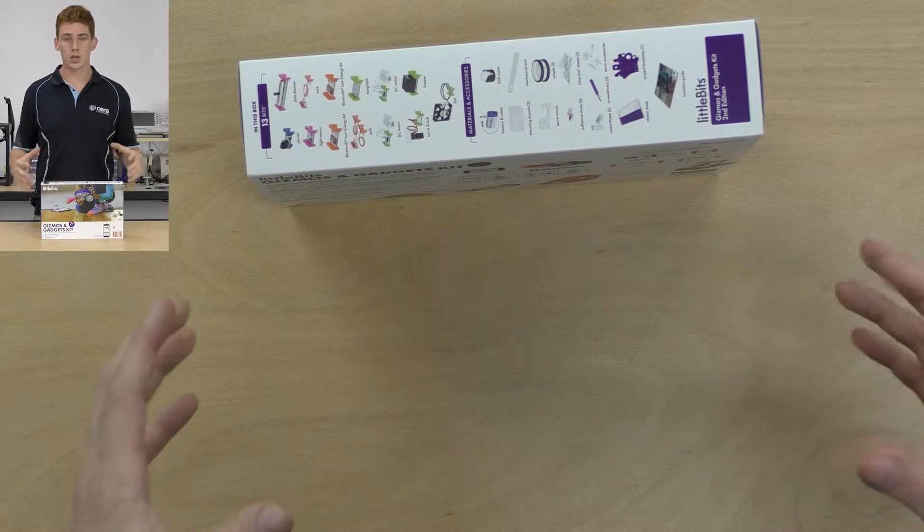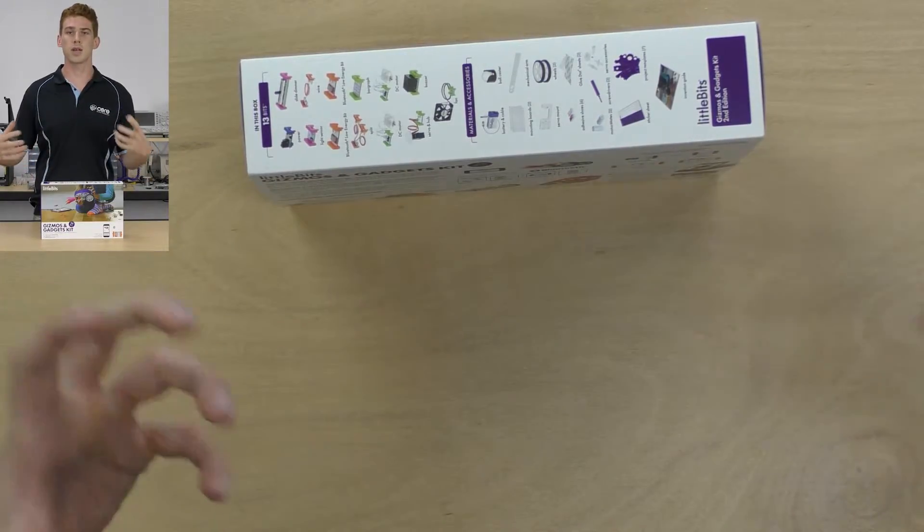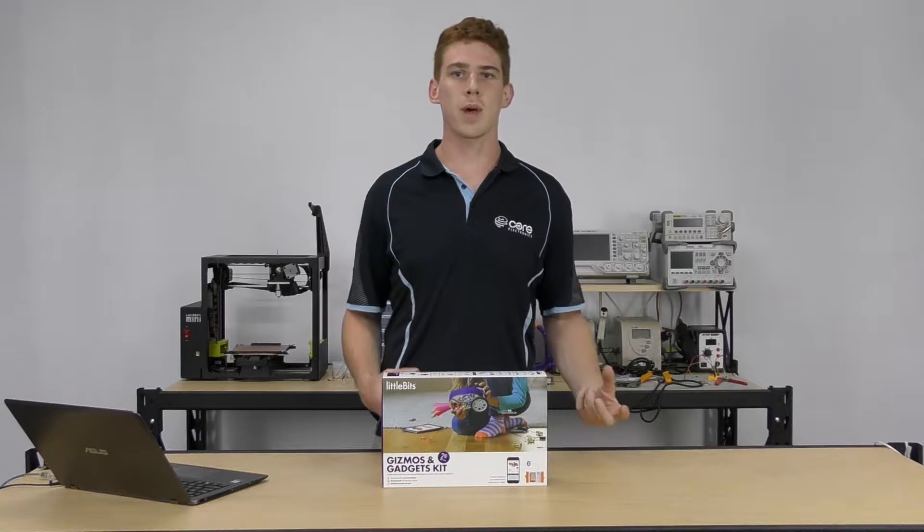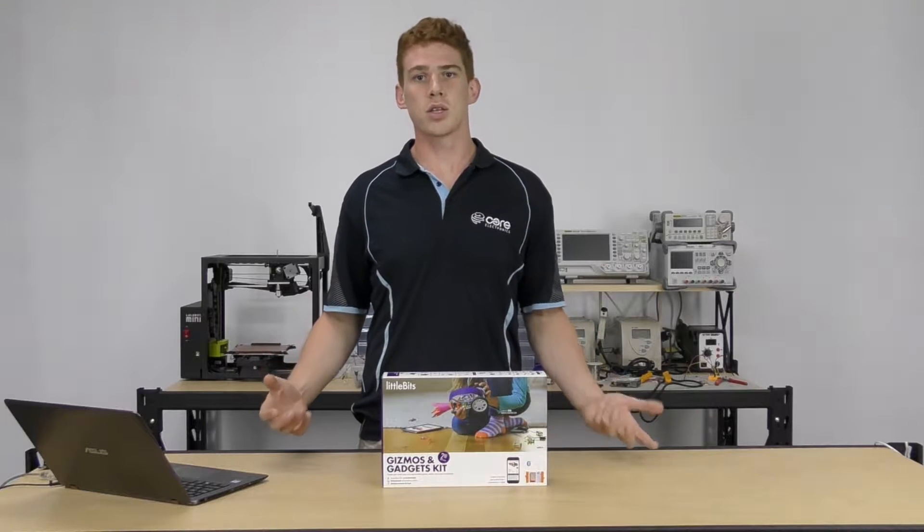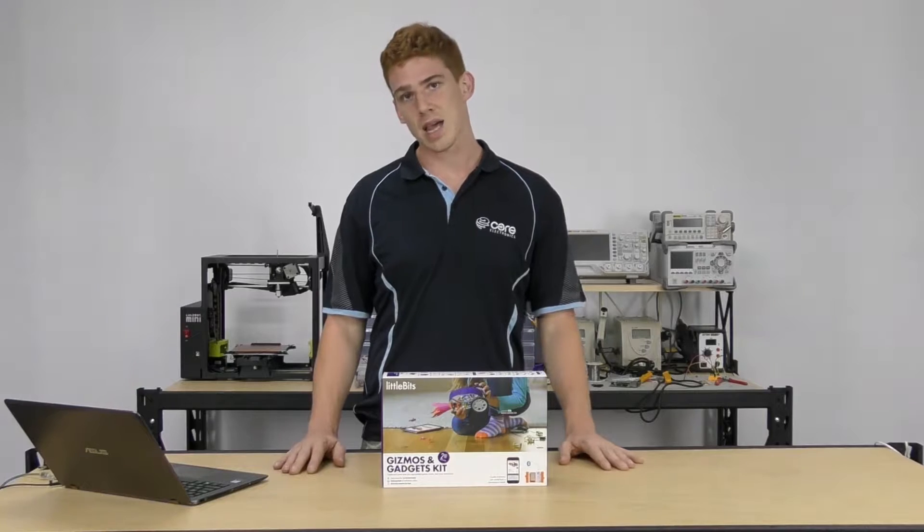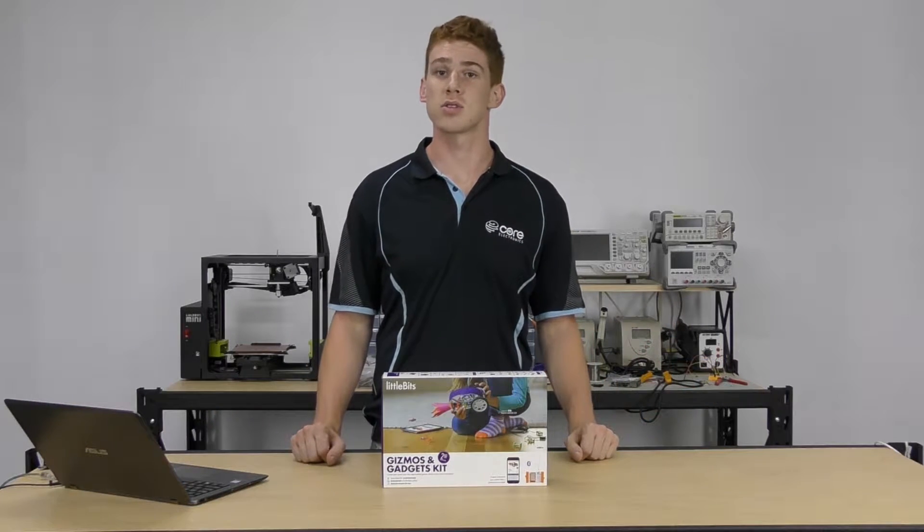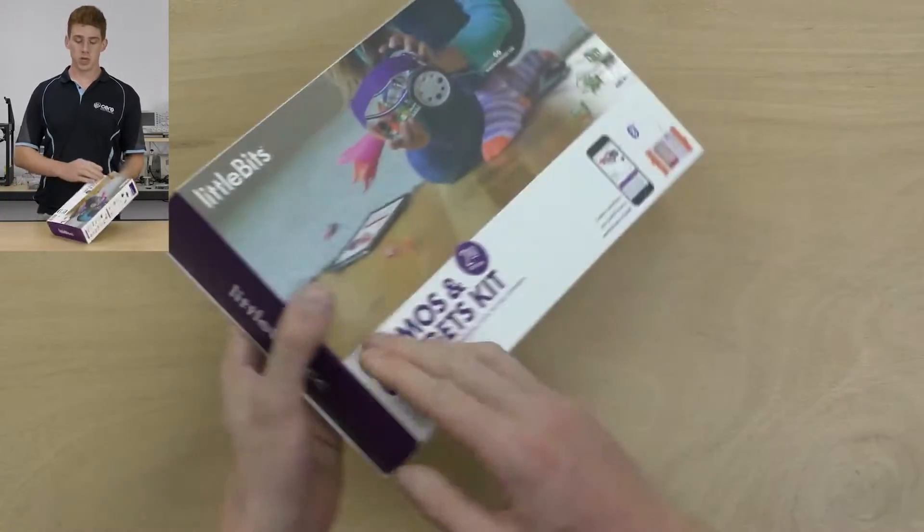So what we're going to do is take this kit apart, pull it apart and see what's inside, see what you get with your Little Bits Gizmos and Gadgets kit. We'll talk about the differences between kit 1 and 2 and then we'll take a look at the Little Bits app alongside the guidebook and see what sort of educational content you get alongside your book. So, let's get into it guys.